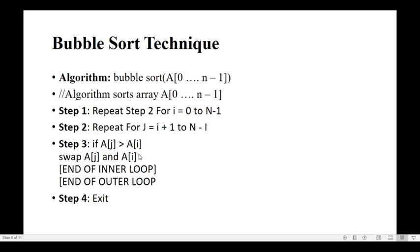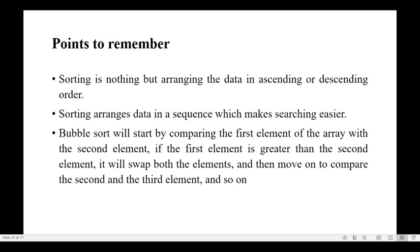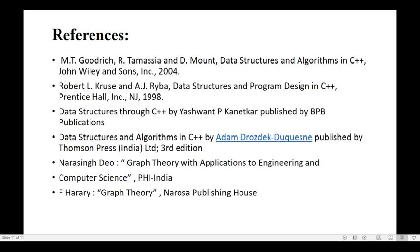Sorting is nothing but arranging data in ascending or descending order. Sorting arranges data in a sequence which makes searching easier. Bubble sort starts comparing the first element of the array with the second element; if the first is greater than the second, swap it, then move on to second and third, continuing till n minus one elements. With this session we are completing bubble sort. Thank you.